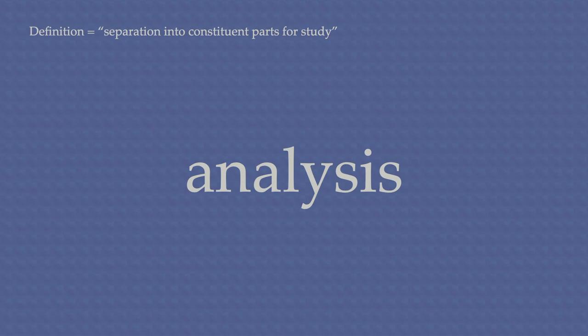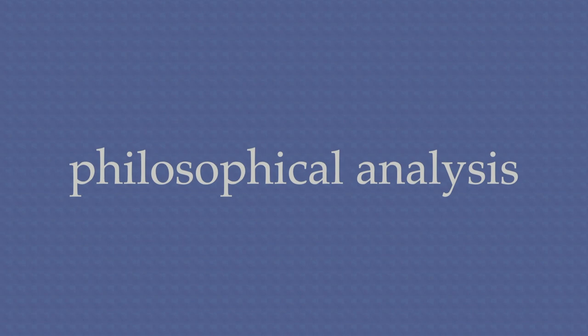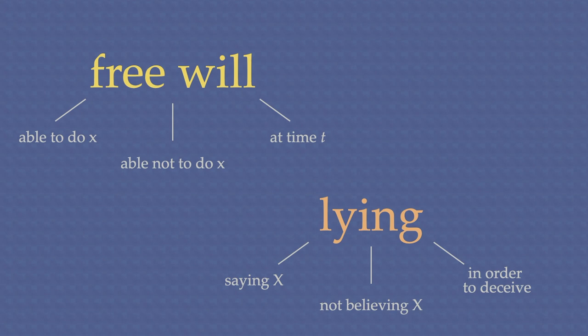An analysis is a breakdown. For example, when we analyze water, we find it's composed of the basic elements hydrogen and oxygen. The same goes for philosophical analysis. Philosophers break down an interesting concept, like free will or lying, into more simple components to get a better understanding of what it is.